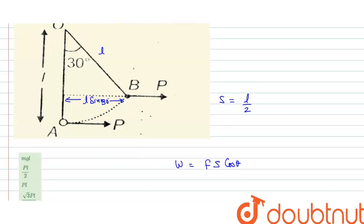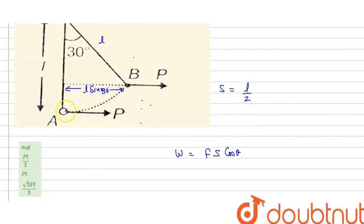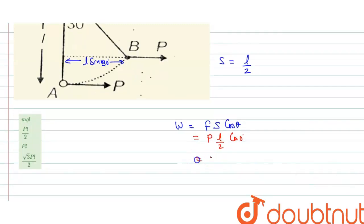So displacement is L upon 2, and direction of displacement is horizontal, and direction of force is also horizontal, so angle between force and displacement is 0 degrees. So here we can say work done is equals to force P, displacement L by 2, and theta is 0, so cos 0 is 1, so this is equals to PL by 2.